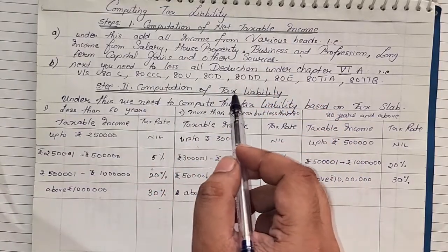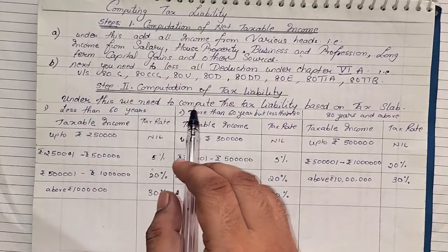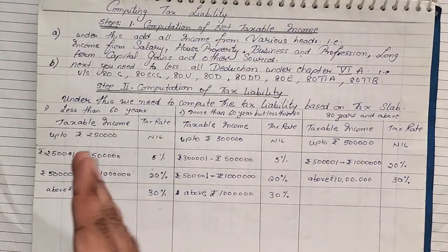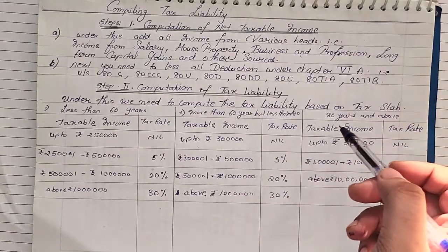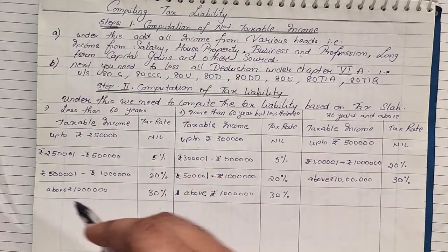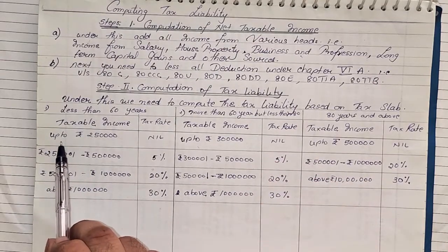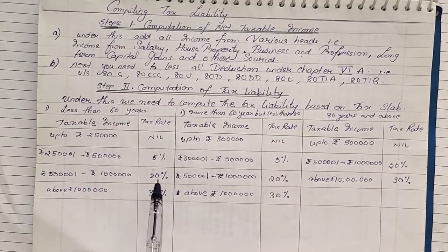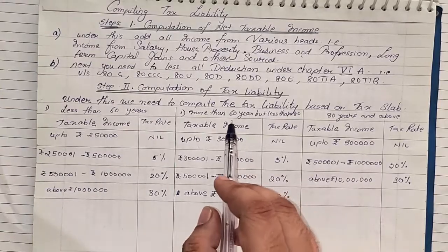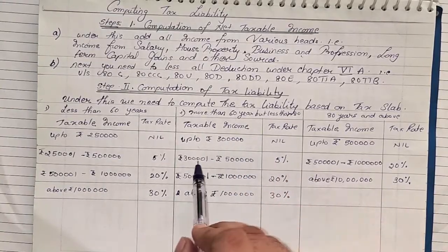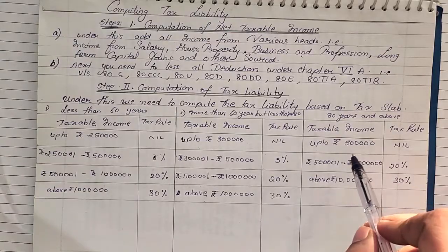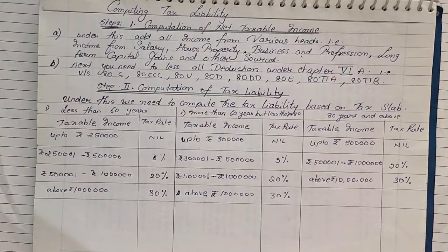Step two is the computation of tax liability based on the tax slab. There are three different tax slabs: one for less than 60 years, second for more than 60 but less than 80, and third for 80 and above. For less than 60: up to 2.5 lakhs — nil; 2.5 to 5 lakhs — 5%; 5 to 10 lakhs — 20%; above 10 lakhs — 30%. For 60 to 80: up to 3 lakhs — nil; 3 to 5 — 5%; 5 to 10 — 20%; above 10 — 30%. For super senior citizens: up to 5 lakhs — nil; 5 to 10 — 20%; above 10 — 30%.